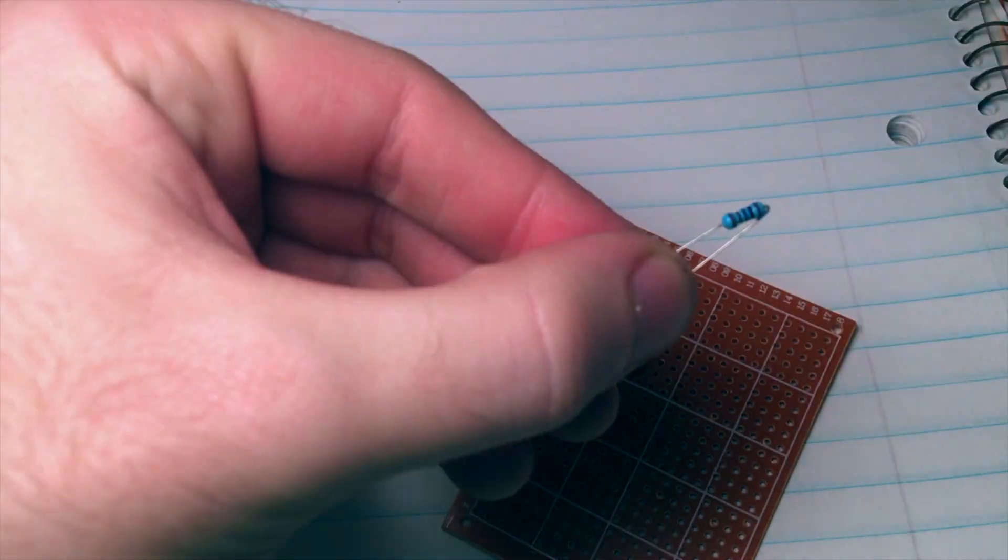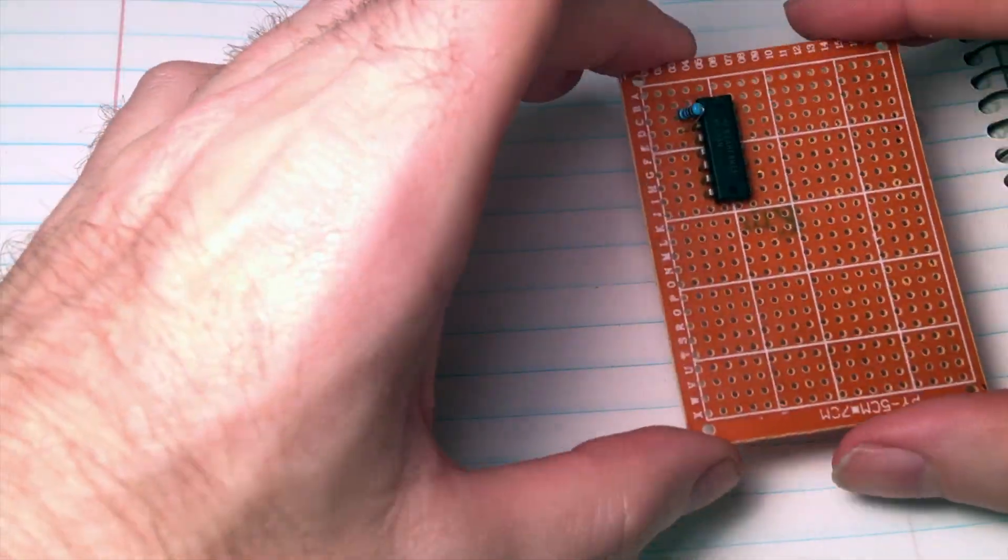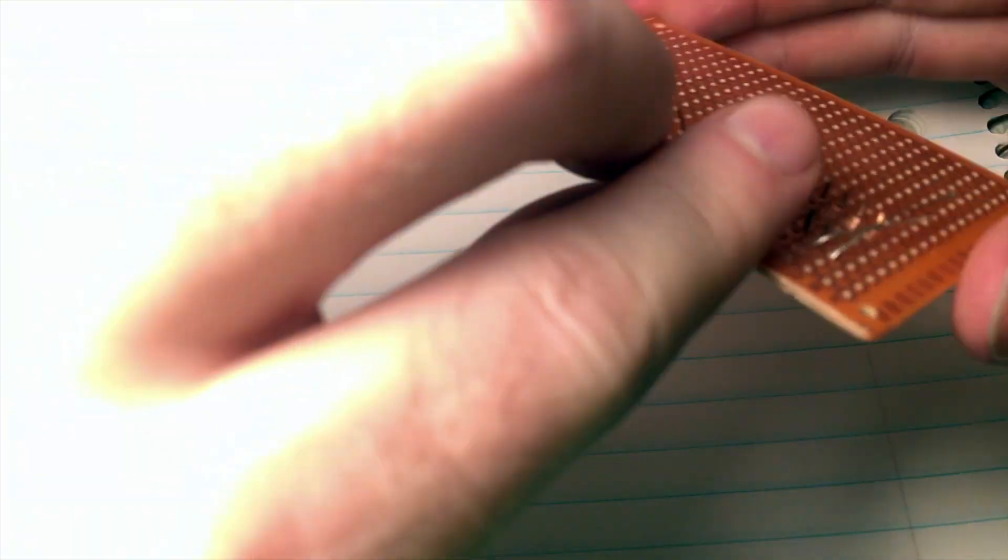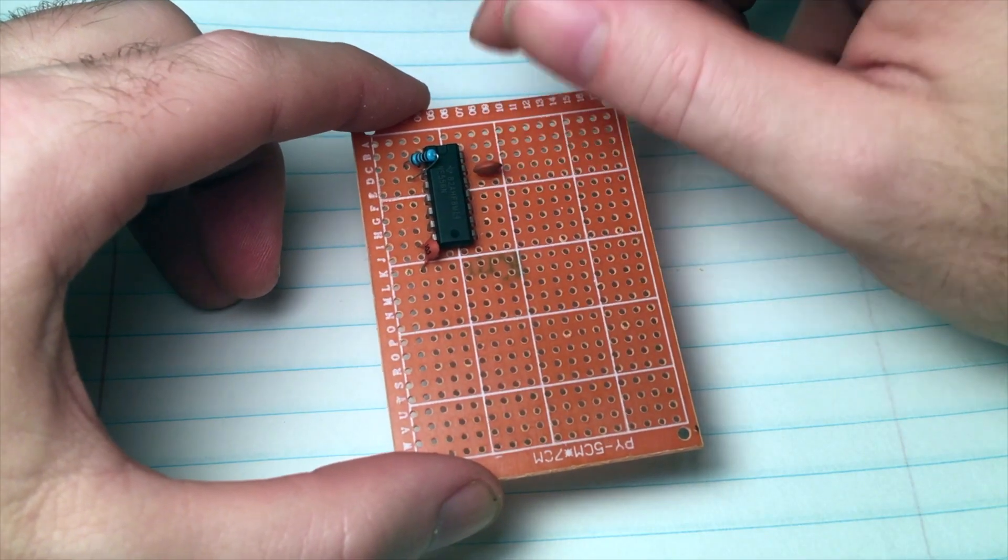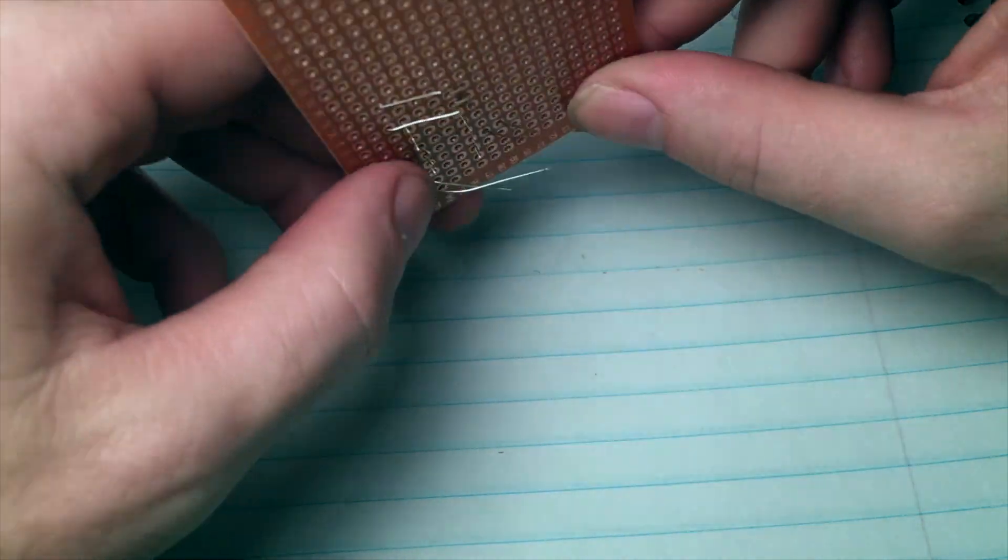And now you're gonna want to populate your board so that 1k resistor goes between 1 and 2. So the ceramic cap goes from 6 to ground and here I put it on 7 to ground and I caught my mistake later. This is the 0.1 microfarad. This cap goes from 12 or 13 to ground.